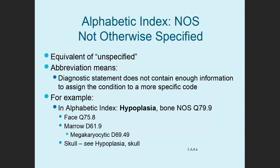An abbreviation used in the index is NOS — not otherwise specified. This indicates that the documentation does not include enough information to select a more specific code. For example, if the documentation states only 'hypoplasia, bone,' you can't assume it's the face, the marrow, or the skull — you just don't have enough information. In that case, use the NOS code Q79.9.